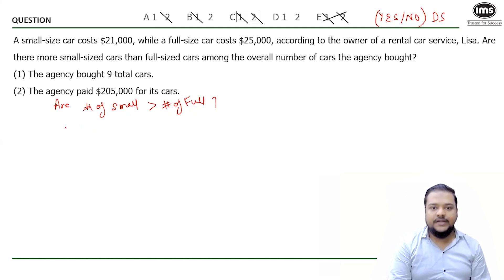Let's see this in the question. So let me write down the other information given here. We also know that the cost of one small car is $21K and cost of one full sized car equals $25K.